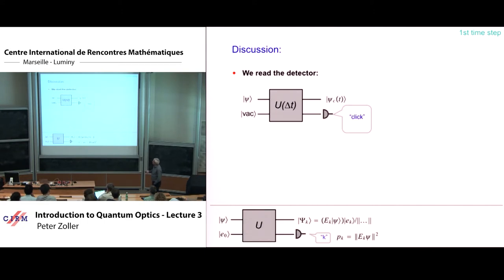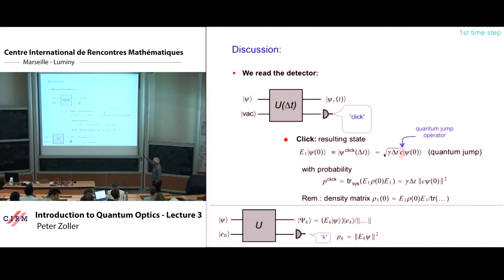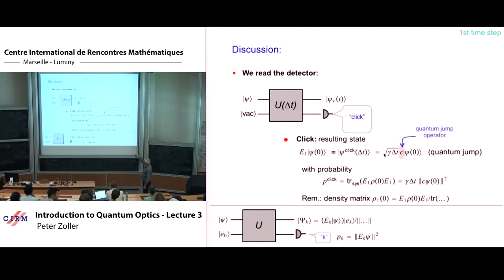Now the more interesting question: suppose we observe the system with a photo detector that can click or not click. If the photo detector makes a click, we apply the corresponding Kraus operator E_1 for photon detected. We just derived that E_1 = √(γ δt) · C, so applying it to the initial state ρ, the conditional state given a click is C ρ C† (up to normalization). This is the quantum jump: when the photo detector clicks, the atom undergoes a quantum jump via the operator C.